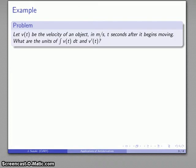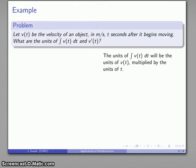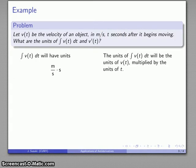Suppose I have the velocity of an object measured in meters per second, t seconds after the object begins moving, and we want to find the units of the antiderivative. The units of the antiderivative are going to be the units of v of t — meters per second — multiplied by the units of t — seconds. So those units are meters per second times seconds, and the seconds cancel. The antiderivative is going to have units of meters. Whatever the antiderivative represents, it's something measured in units of meters.